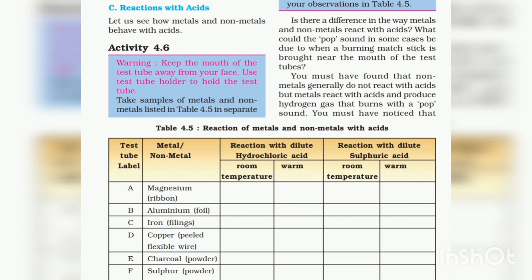Is there a difference in the way metals and non-metals react with acid? What could the pop sound in some cases be due to, when a burning matchstick is brought near the mouth of the test tubes? You must have found that non-metals generally do not react with acids, but metals react with acids and produce hydrogen gas that burns with a pop sound. Underline these points — it's very important.